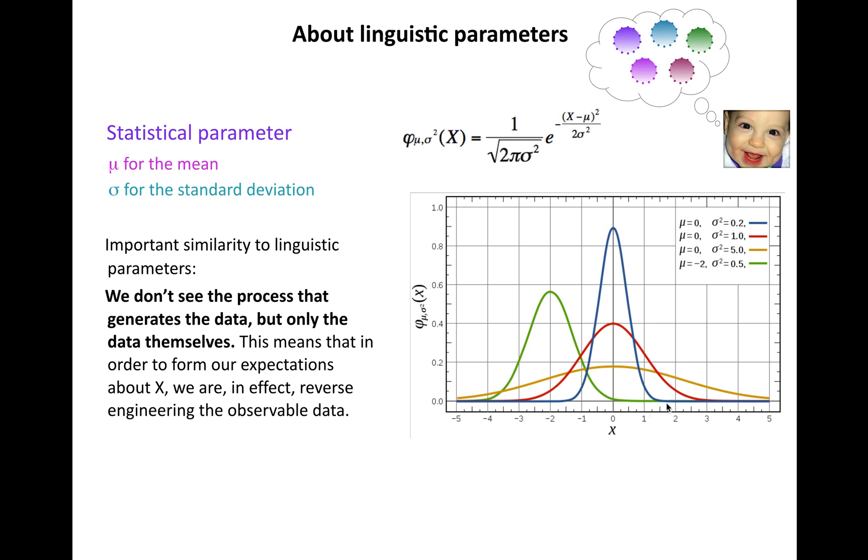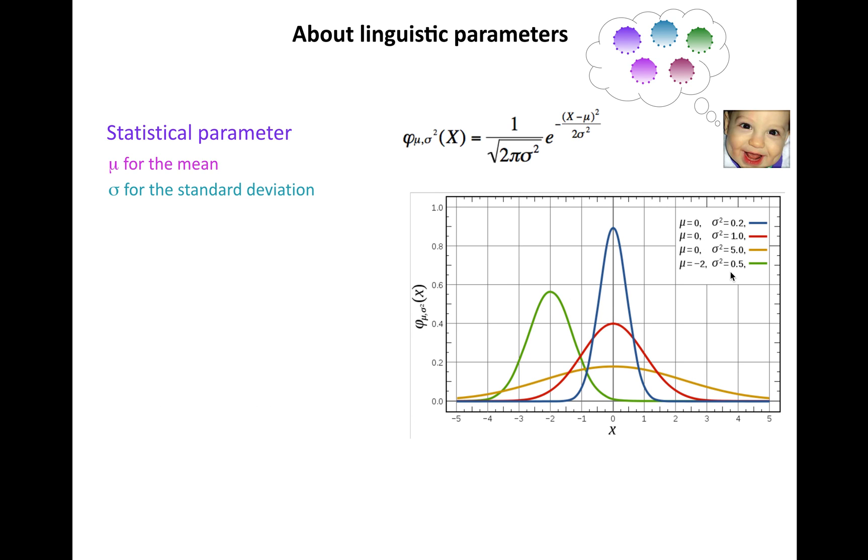This means that in order to form our expectations about the behavior we want to observe, we have to basically reverse engineer the observable data to decode what the most likely parameter values actually are.